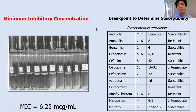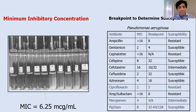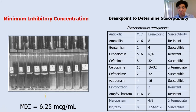The second important concept is the breakpoint — an MIC already established by institutions such as CLSI in the USA, or EUCAST in Europe. The breakpoint tells us whether a bacterium is resistant or sensitive to an antibiotic. For example, if a strain has an MIC of 2 to vancomycin, and the CLSI breakpoint for sensitivity is less than 4, you can conclude that strain is sensitive to vancomycin.